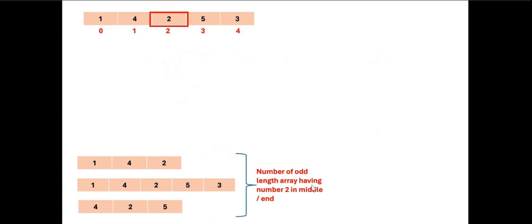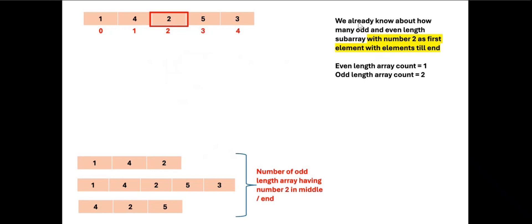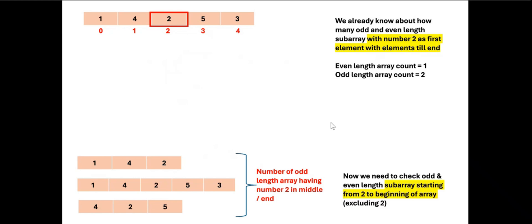Now let's understand the second part: calculating the number of odd length subarrays where number 2 is in the middle or at the end. We already know how many odd and even length subarrays have 2 as the first element going to the right. Now we need to check odd and even length subarrays going from 2 back to the beginning of the array, excluding 2 itself since we already counted 2 in the first part.